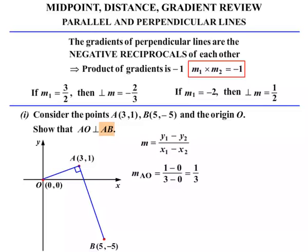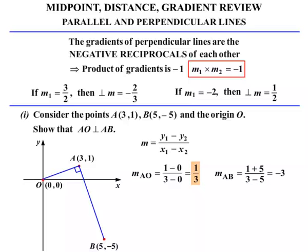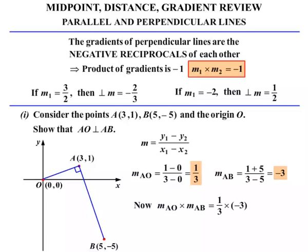Now we consider AB. The gradient of AB: Y values are 1 and -5, so (1 minus -5) equals 1 plus 5, over X values 3 and 5, giving (3 minus 5). That simplifies to 6 over -2, which is minus 3. So we have one gradient of 1/3 and the other of minus 3 — which is the negative reciprocal. To show perpendicularity, we use M1 times M2 equals minus 1: (1/3) times (minus 3) equals minus 1. Therefore AO is perpendicular to AB.